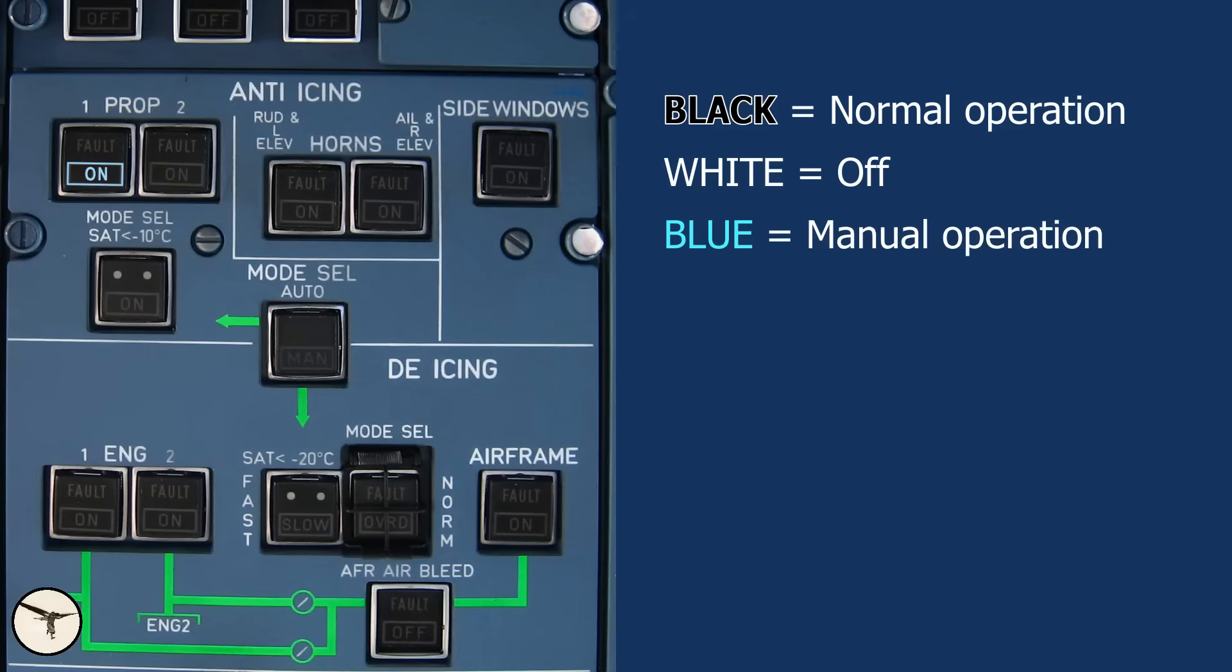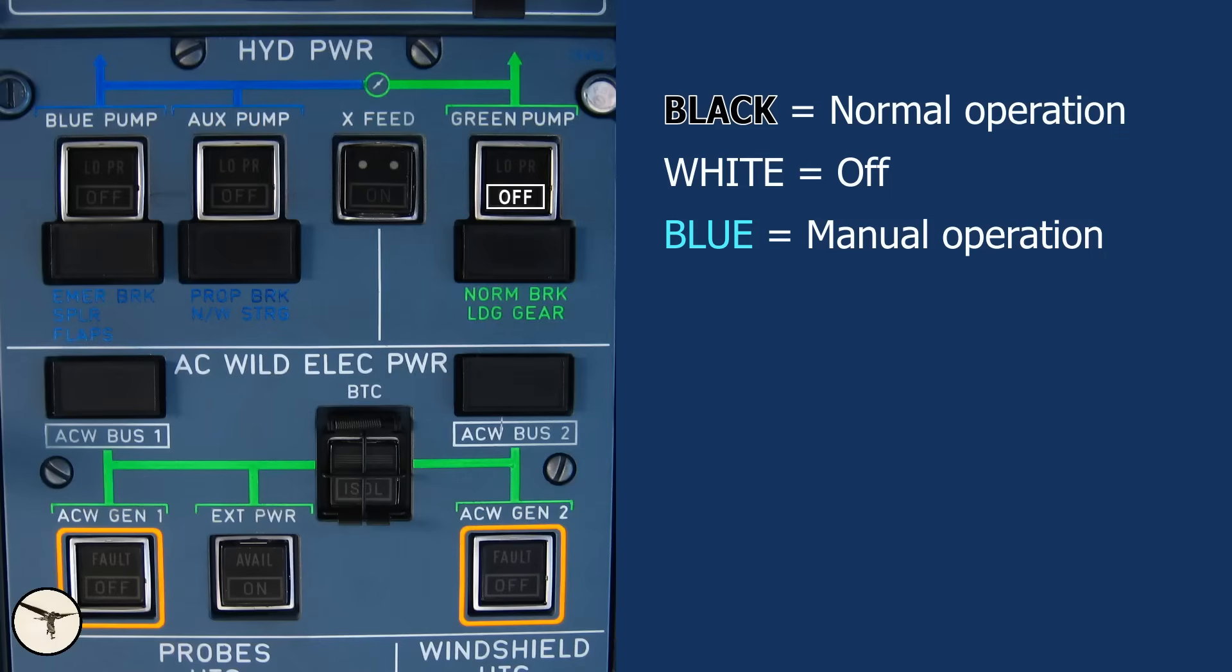Blue, the system is manually turned on. For example, this applies to anti-icing systems, which are used only when flying in icing conditions, or when using hydraulic cross-feed. In earlier ATR variants, this light was white, as ATR initially considered white to indicate a non-normal operation. However, they later decided that blue was a more logical choice for this indication.